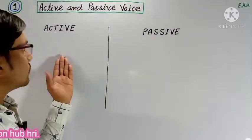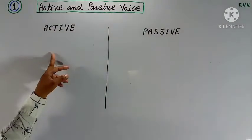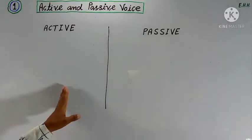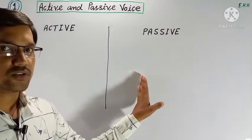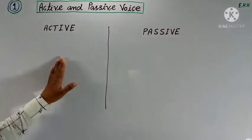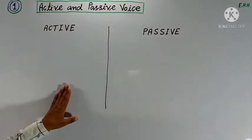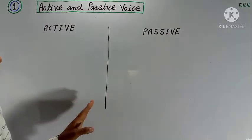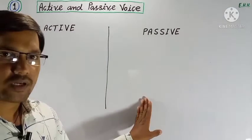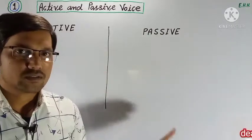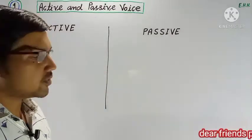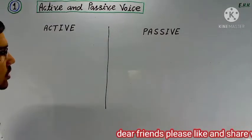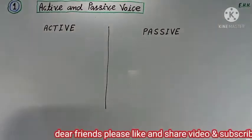Active Voice is called 'kartavach' — in active voice, the verb gives prominence to the subject (karta). Passive Voice is called 'karmvach' — in passive voice, the verb gives prominence to the object (karm). In this video, I will tell you how to use active and passive voice.